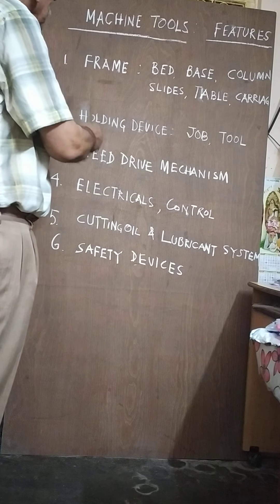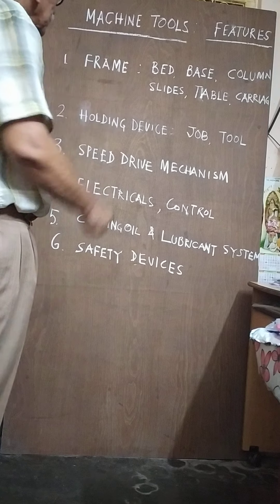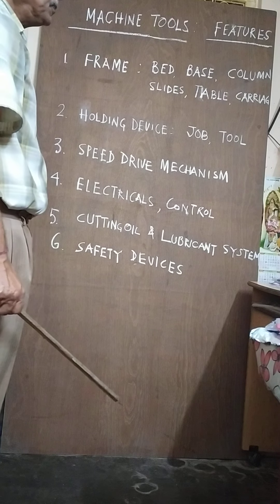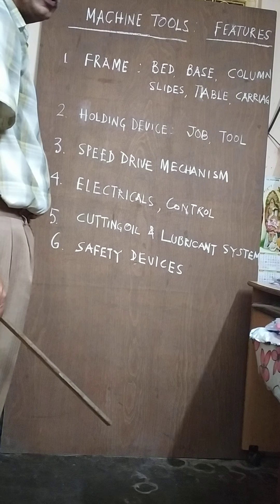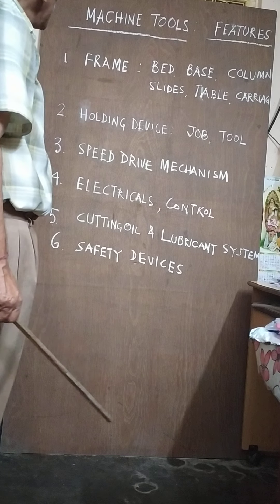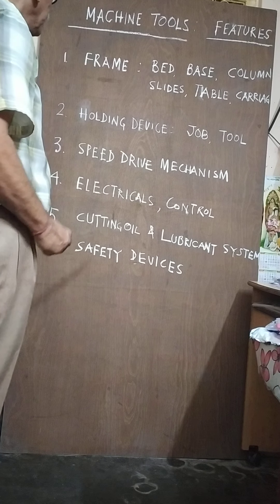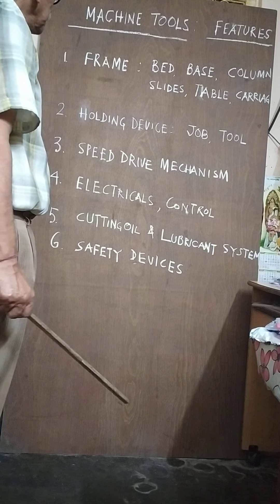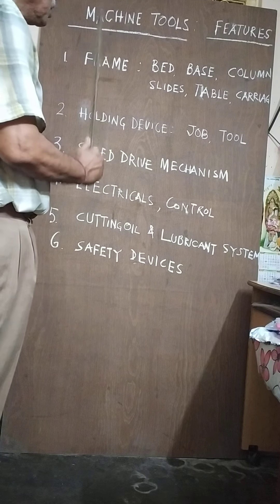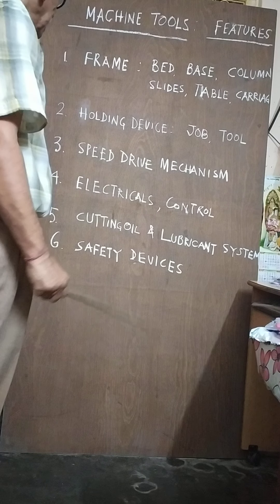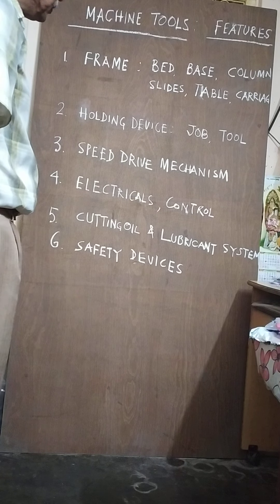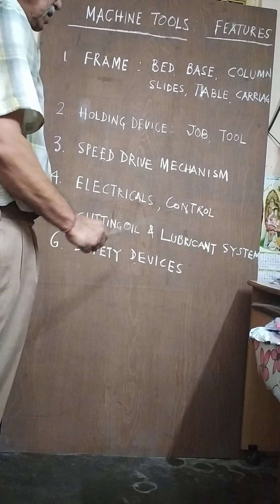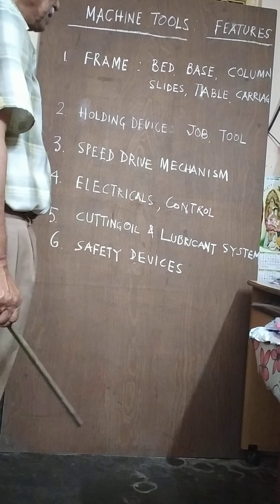Machine tools are of three types. One is the conventional or general purpose machine tool. Second is the special purpose machine tool. Third is the CNC machine. CNC stands for computer numerical control, where the computer performs the operations and the program is inserted into the computer.